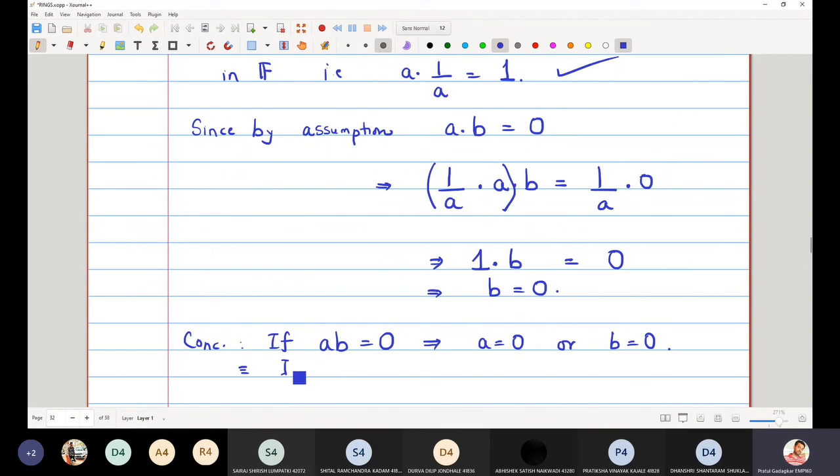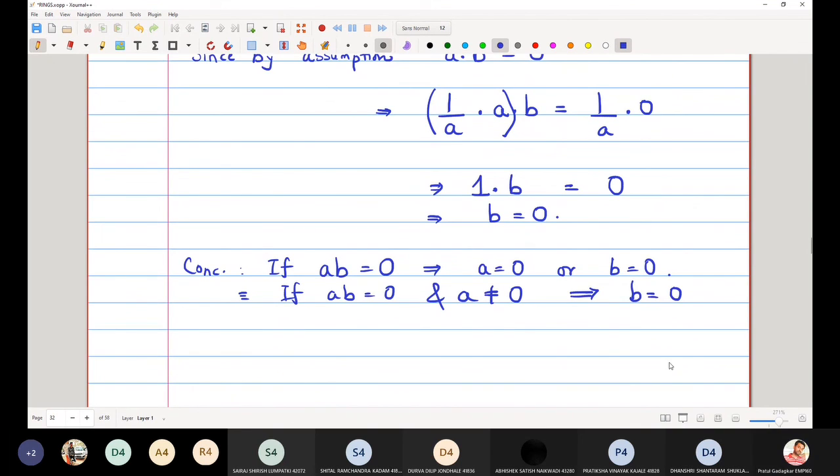Which is equivalent to say that if AB is 0 and A is not equal to 0, then we have proved that B is equal to 0, which means that the field F is an integral domain. This is the definition of our integral domain. So this completes this proof.